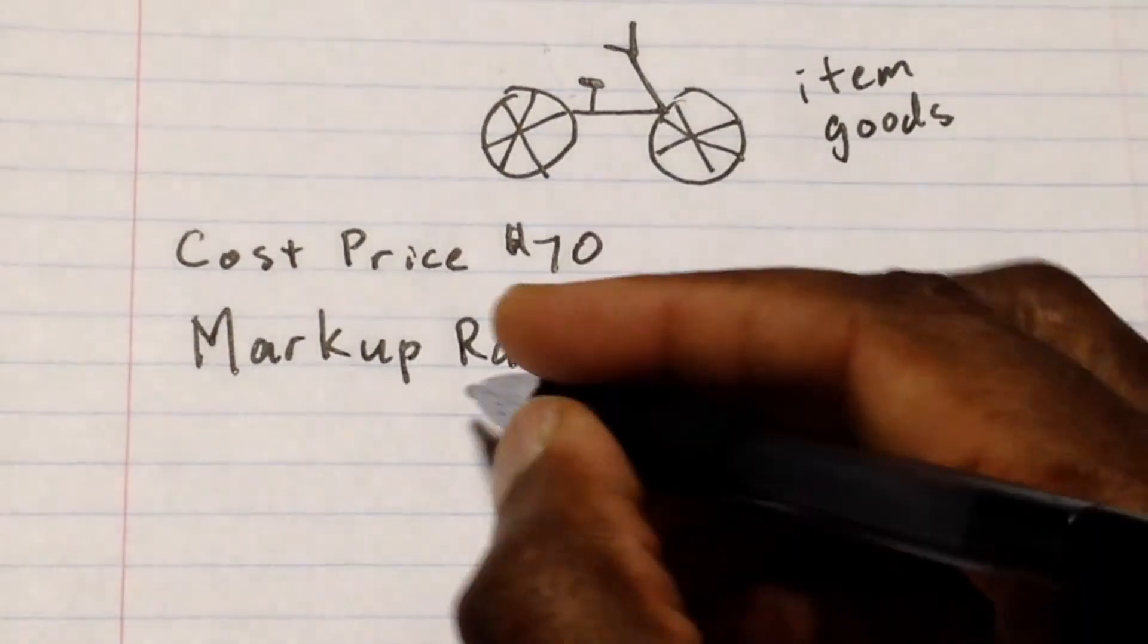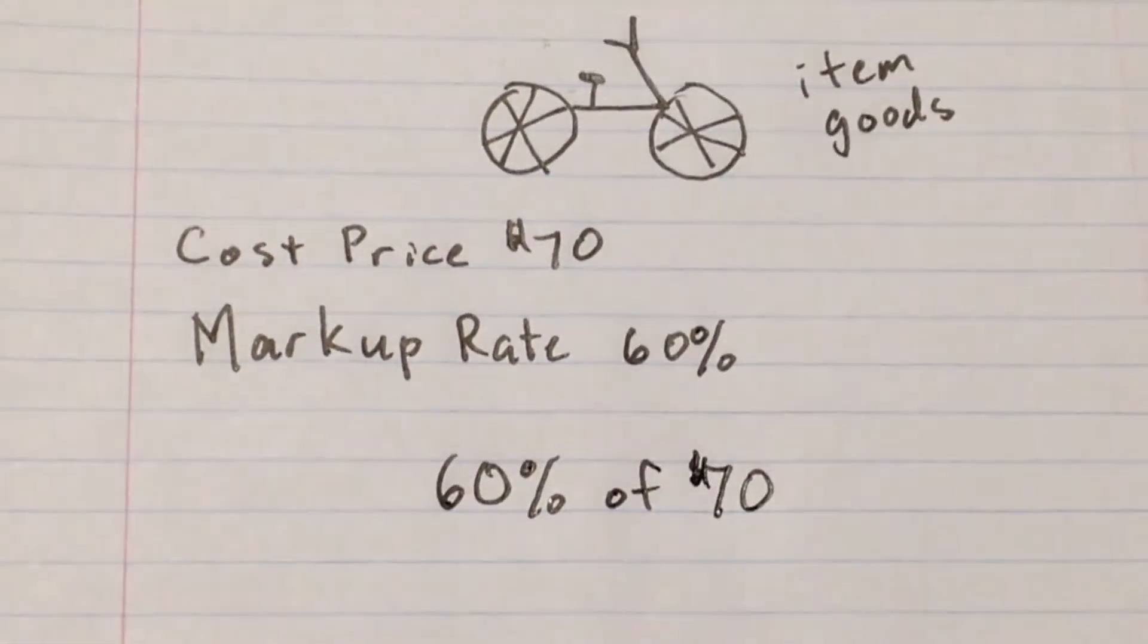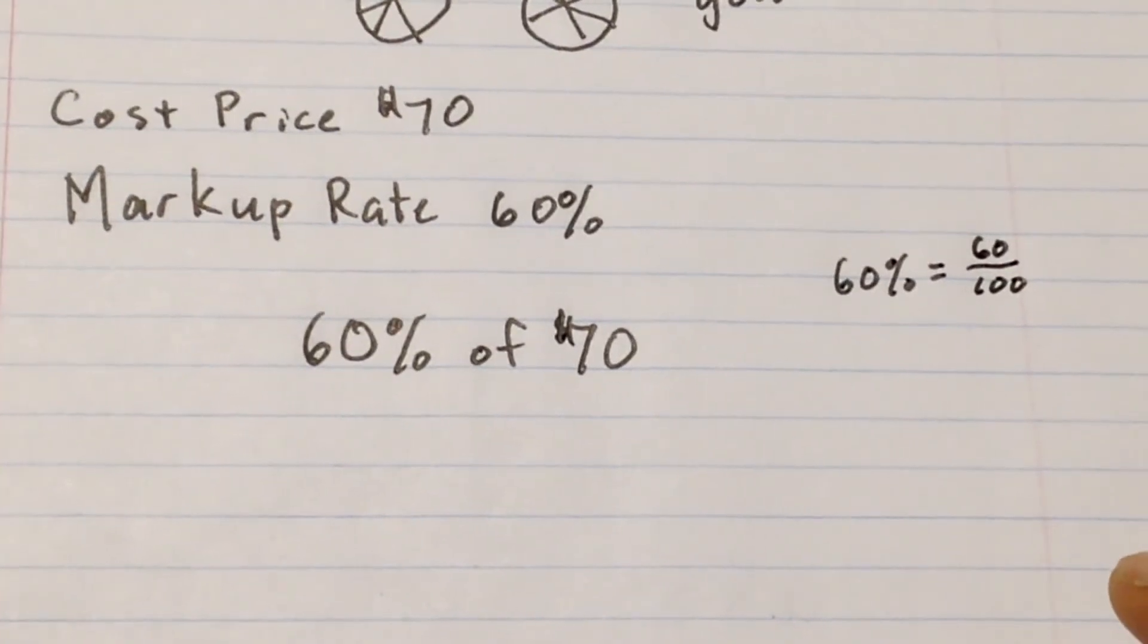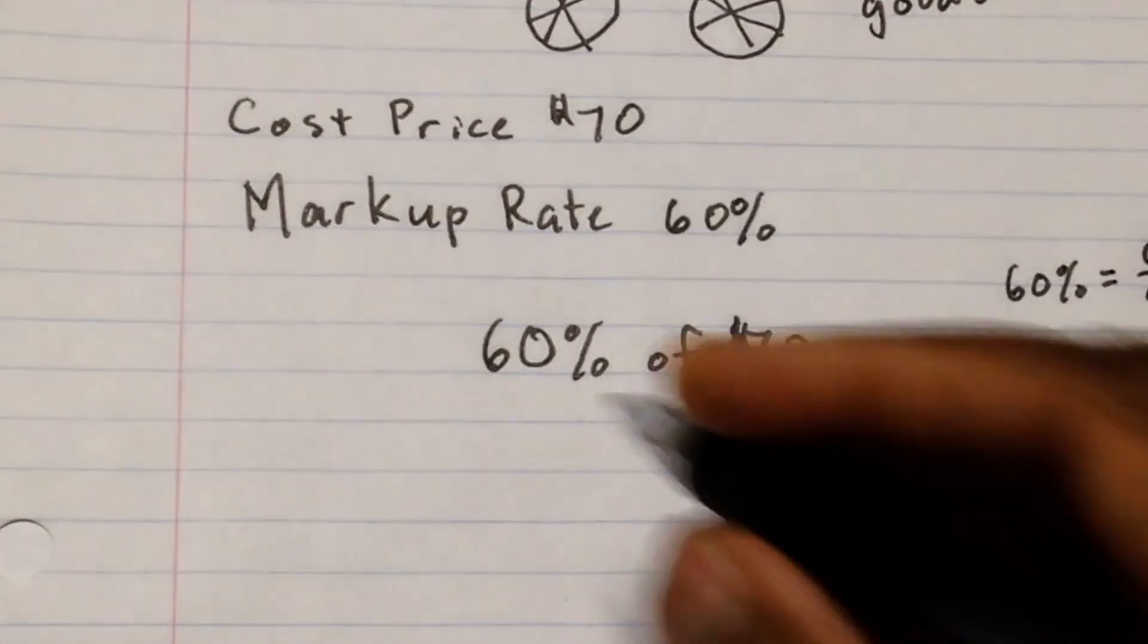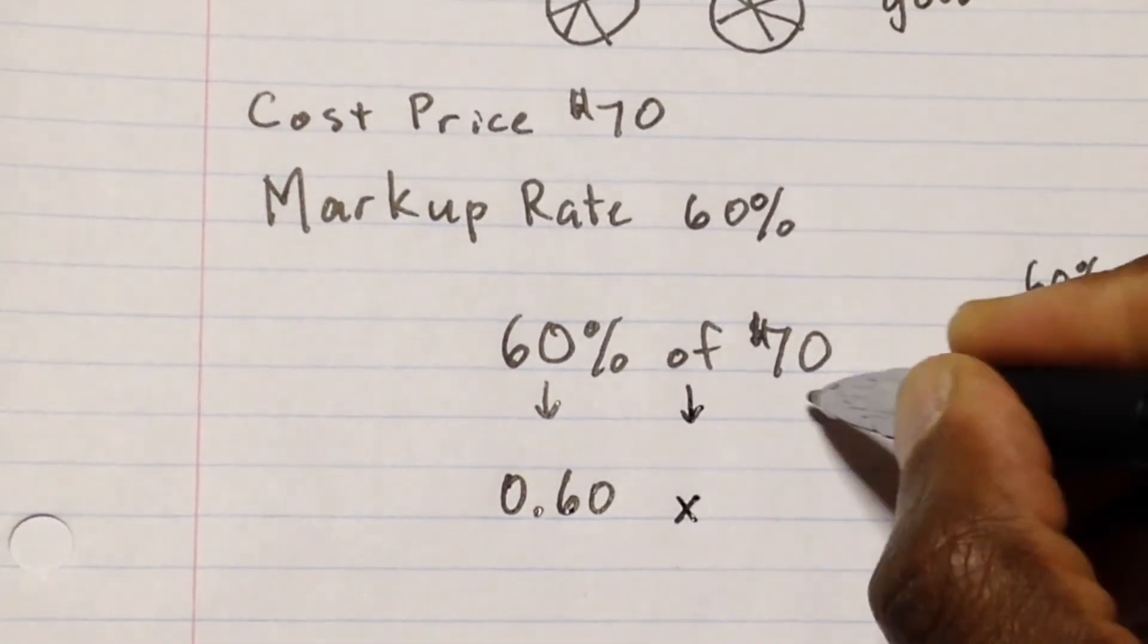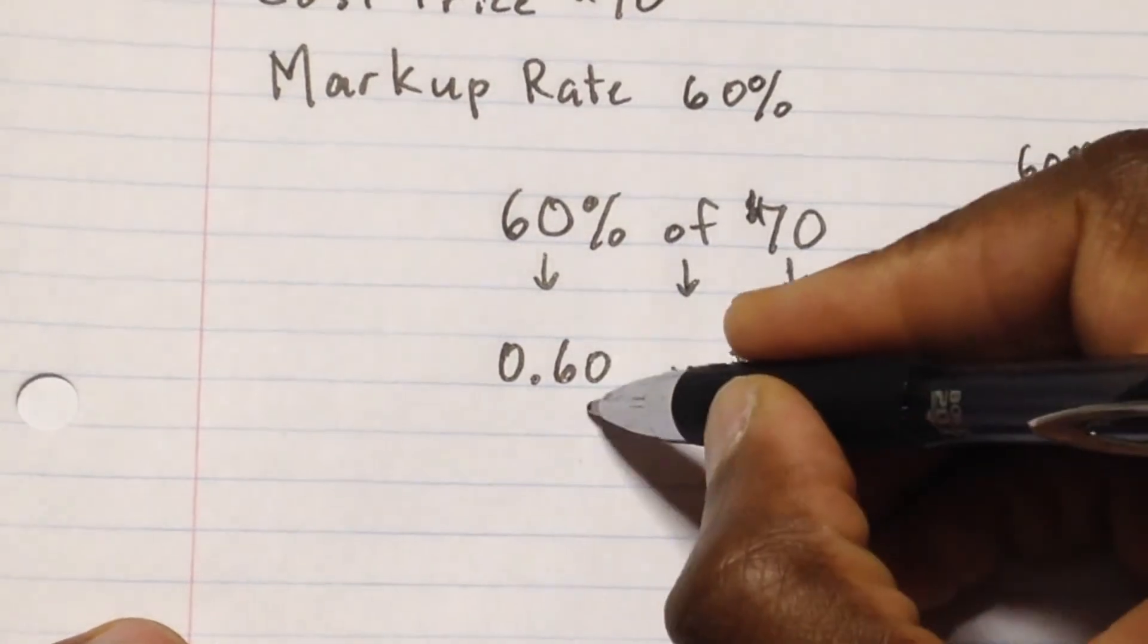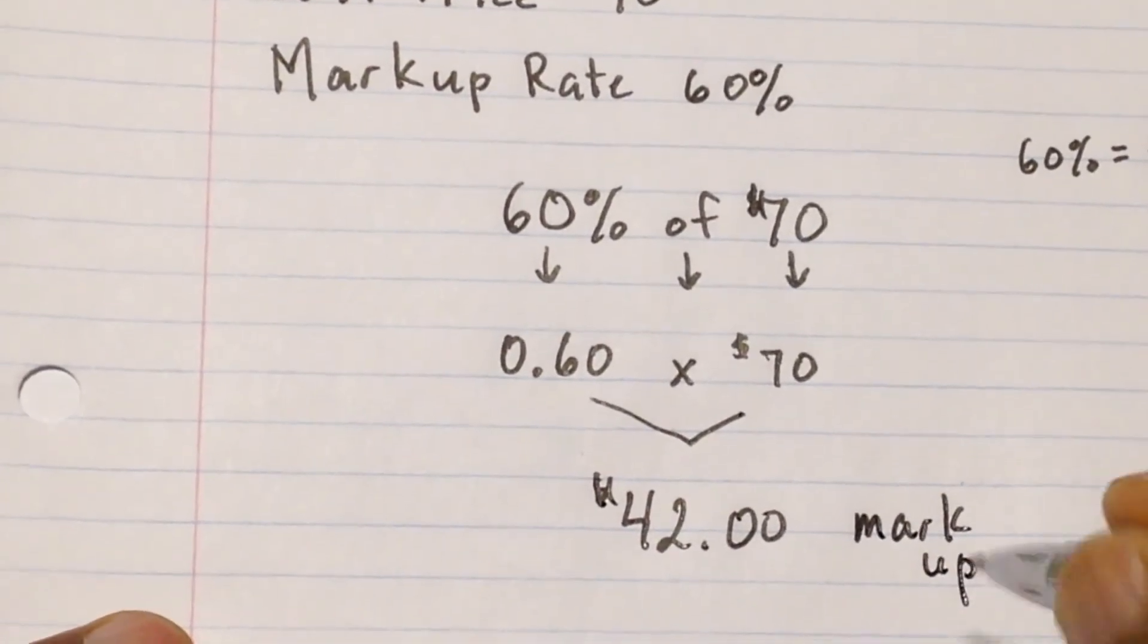All right. So in order for us to do this, to find out how much is going to be our markup, we're going to do 60% of the $70. And remember, we want to turn 60% into a decimal. Let's just do the work on the side here. Remember that 60% means 60 out of a hundred. And when you take 60 out of a hundred and you divide it, 60 divided by a hundred, you'll get 0.60. So 60% will now come out to be 0.60. Of means multiplication. And we're going to take 60% of the cost price, $70. Now when you do the math of 0.60 times 70, we get $42. So this is our markup.